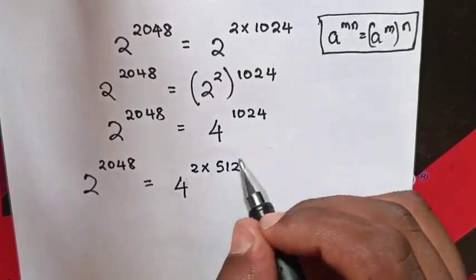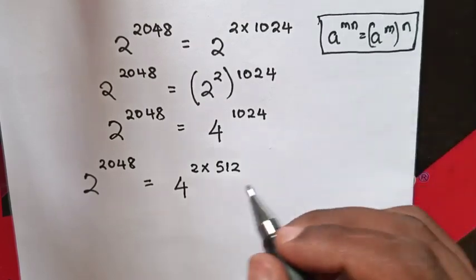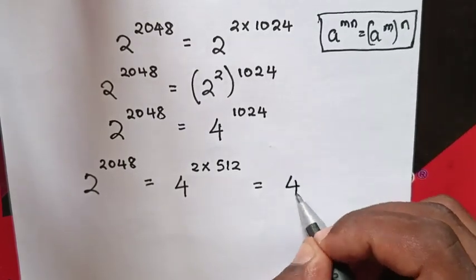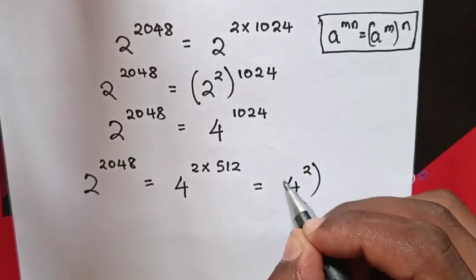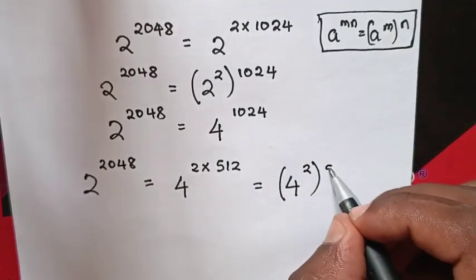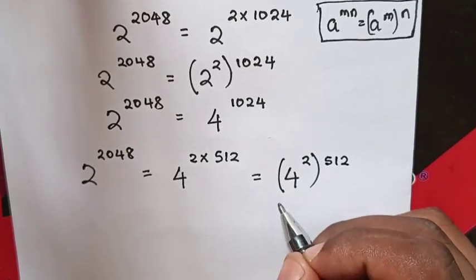Now we apply the same rule, a^(mn) = (a^m)^n. So this equals (4^2)^512.